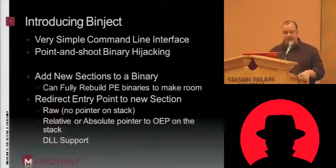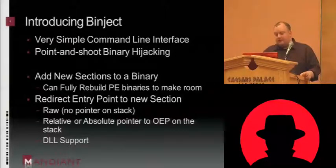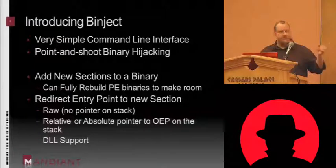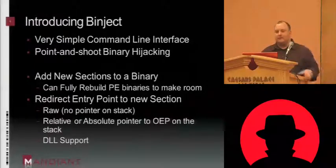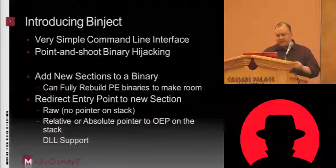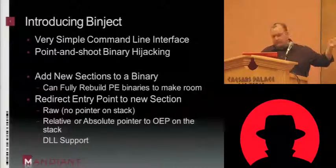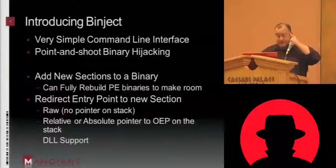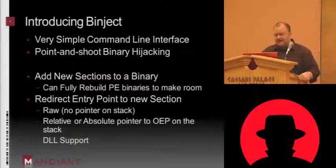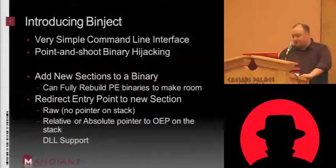One of the things I can do — the most basic thing — is just add new sections to a binary. Nothing particularly groundbreaking about that, but it does have a very good algorithm for adding sections. If we have time at the end I can pull up PE View and show you some examples where my tool succeeds and other tools fail. If you just wanted to add data inside a binary — very crude steganography or something like that — the tool supports it.